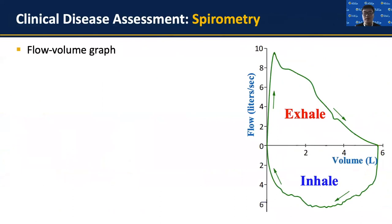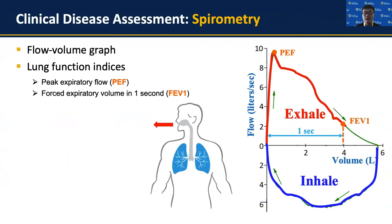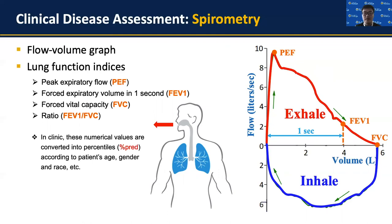These spirometry measurements can be represented as a flow-volume graph, showing a correlation between the volume and velocity of the airflow. From this graph, several lung function indices can be derived. These indices are derived mainly from the exhaling stage and include the maximum outgoing air velocity, the outgoing air volume in the first second of exhalation, and the entire volume of outgoing air. The ratio of FEV1 and FVC is used as the overall reference of lung function. This ratio should be higher than 80% among healthy humans, but could be as low as 50% to 60% among asthma patients. Due to the correlation between lung function and body characteristics such as height and gender, these indices are converted into percentiles for better representation.